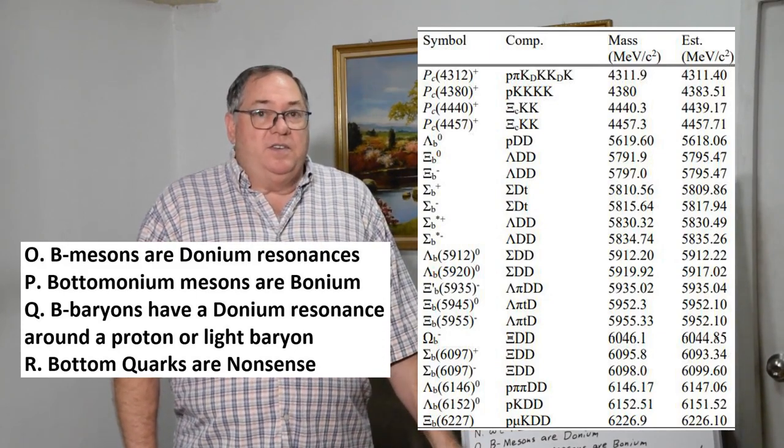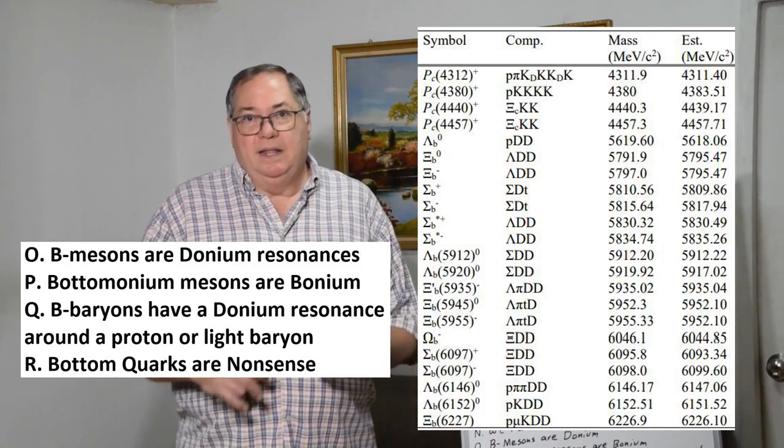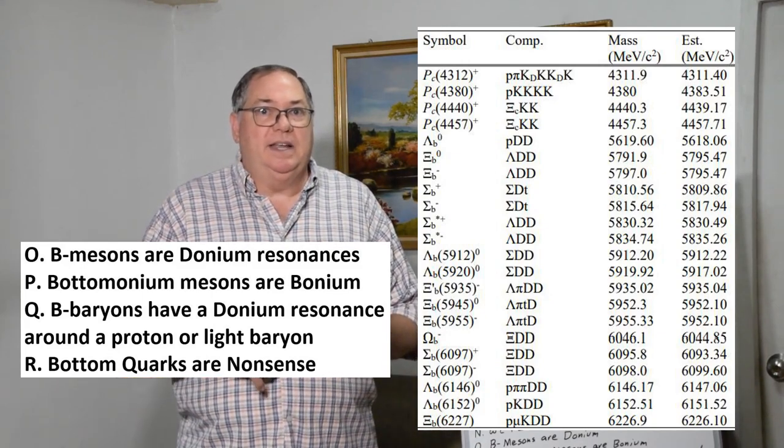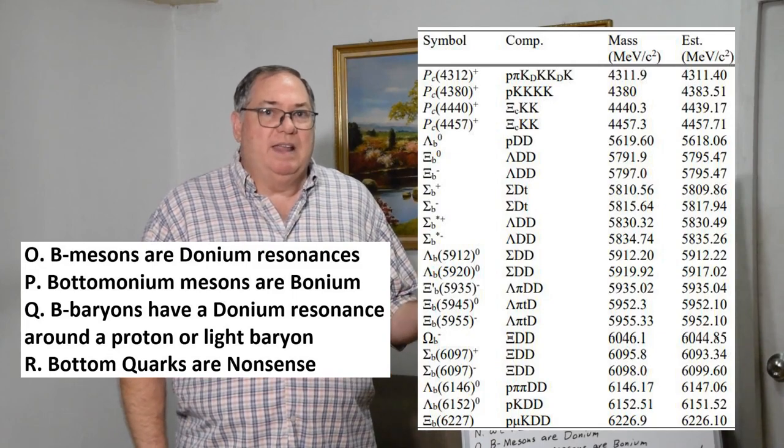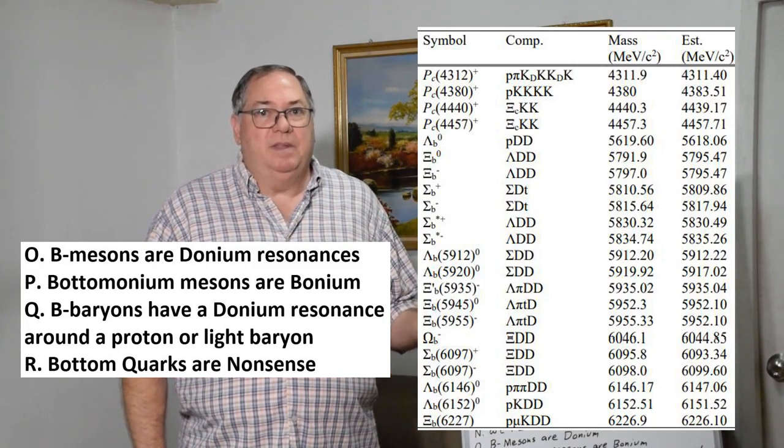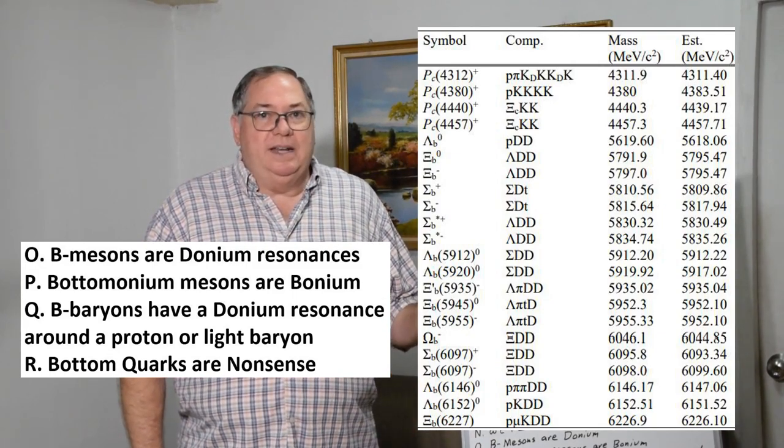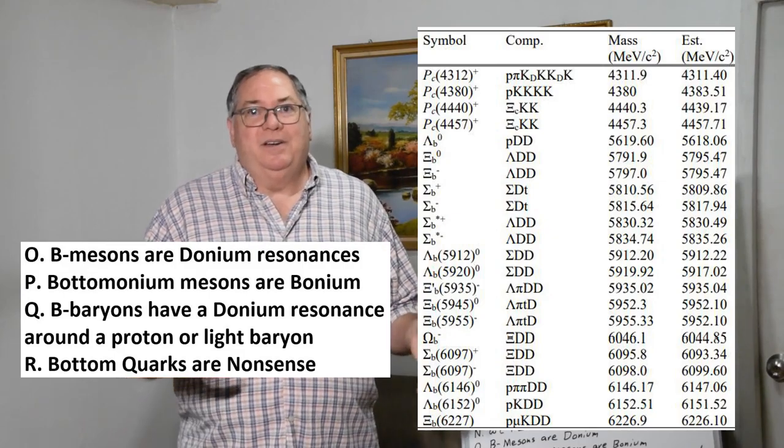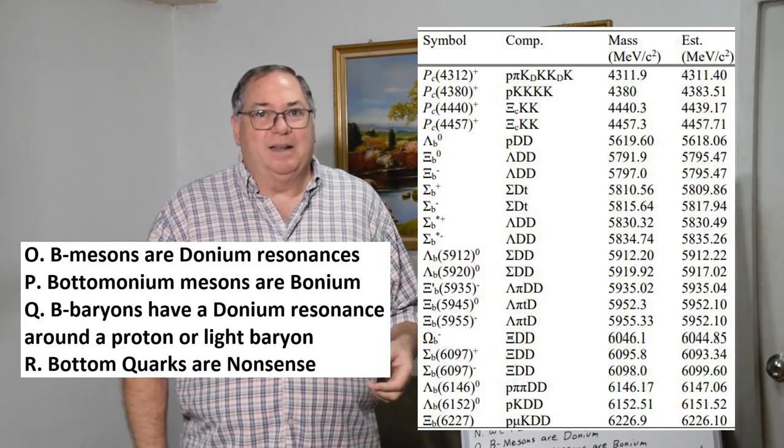In addition to the bottom baryons, the double charm baryons and the exotic baryons also fit immediately into the onium theory. You don't need to have a special new theory to account for the exotic baryons.